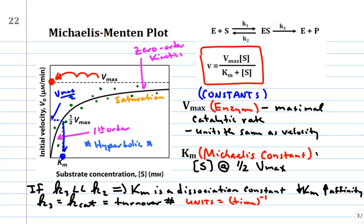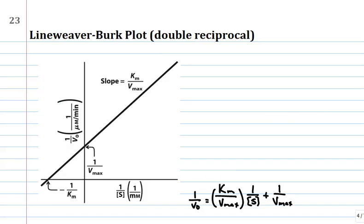If you're trying to measure Vmax and Km, the Michaelis-Menten plot is problematic because you don't know when it really levels off. What was developed is what we call the Lineweaver-Burk plot. You take one over the Michaelis-Menten equation and do some math — rearrange and substitute — and you end up with the Lineweaver-Burk equation.